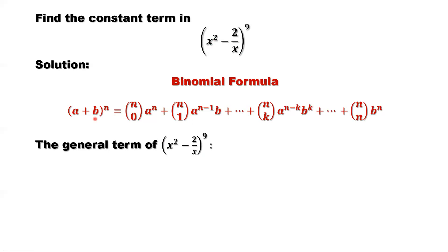The general term is 9 choose k. 9 is the power, it's the n. a to the power 9 minus k, where a is x squared. b to the power k, where b is negative 2 over x.